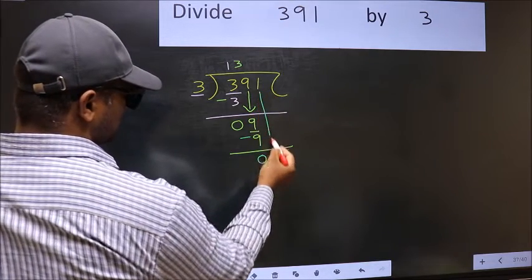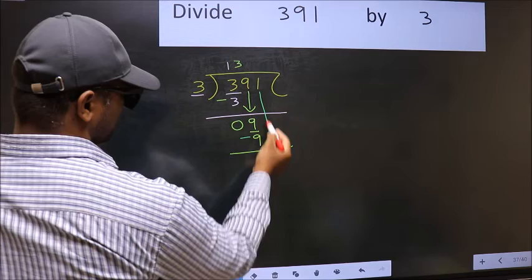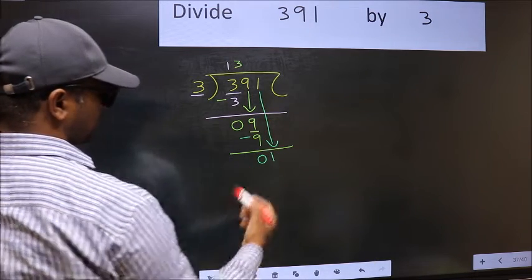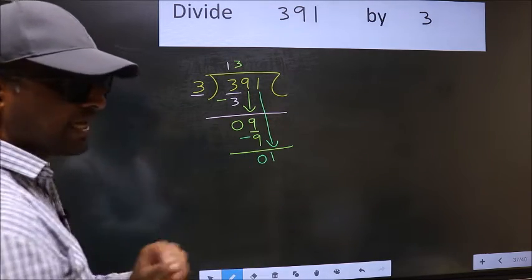After this, bring down the beside number. So 1 down. After this step, the mistake happens.